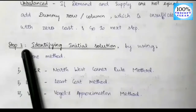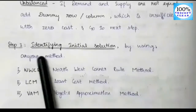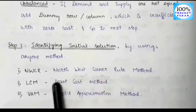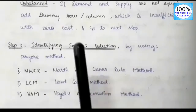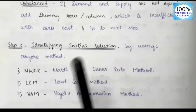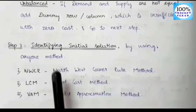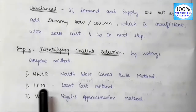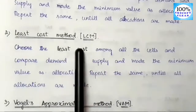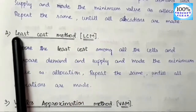Next step is Step 3: identifying the initial solution. In this step, we find the initial solution using any one method. In this video, we use the least cost method. First, choose the least cost among all the cells — that's why the method is called the least cost method. Then compare demand and supply, and make the minimum value the allocation.